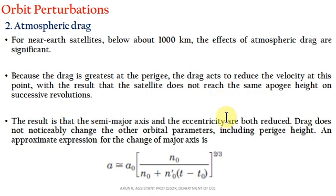In summary, orbital perturbations are simply changes in orbital parameters due to various effects. One effect is Earth's oblateness — the deviation of Earth from a uniform spherical mass, resulting in an oblate spheroid shape that changes orbital parameters. The second is atmospheric drag, which varies satellite velocity in the orbit, thereby changing orbital parameters. These effects are collectively known as orbital perturbations. Thanks for watching.